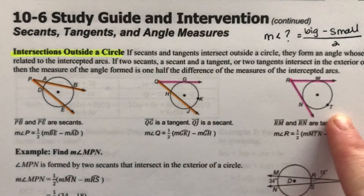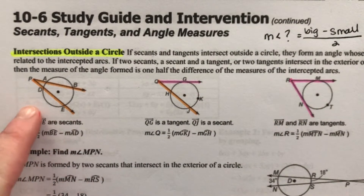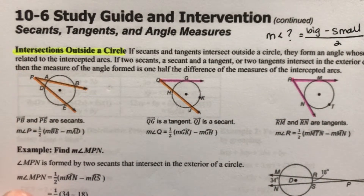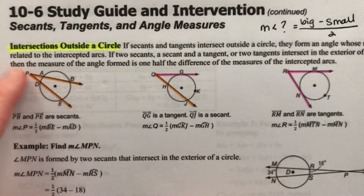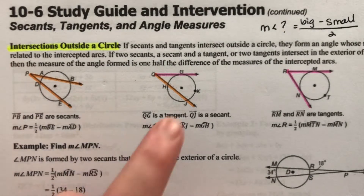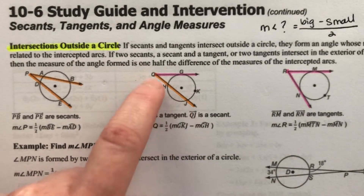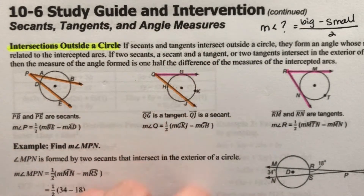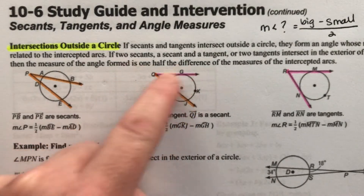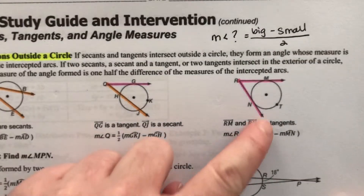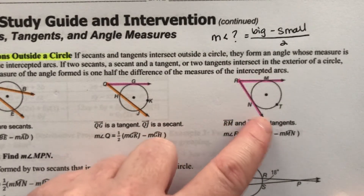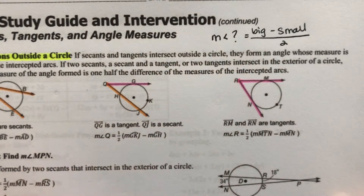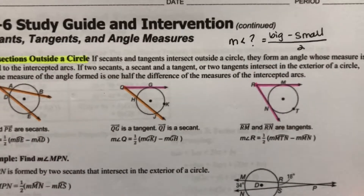We've got three different possibilities here. Both of our lines could be secant lines, so both lines cut through the circle and they intersect outside the circle. One of the lines could be a secant and one could just be a tangent and brush past it — they still intersect outside the circle. Or both lines could be tangent, so neither one goes inside the circle; they both brush past the outside and intersect somewhere outside.